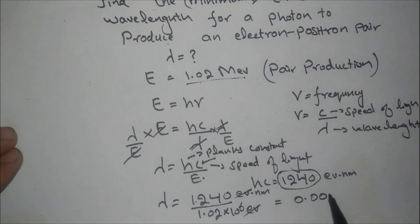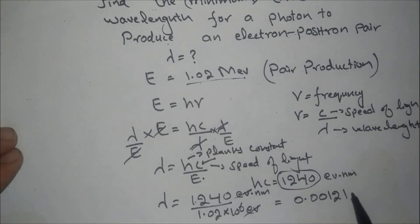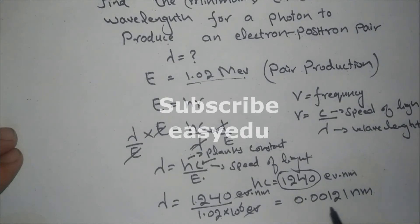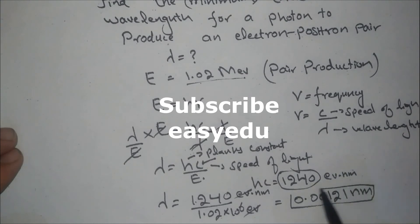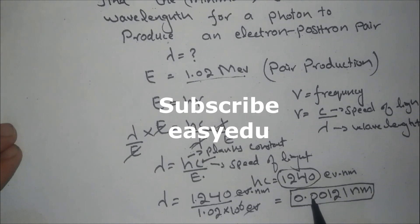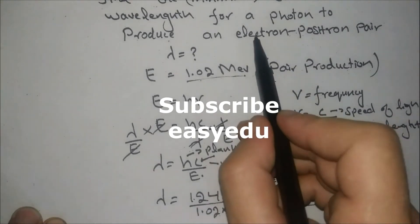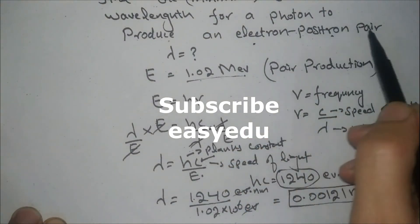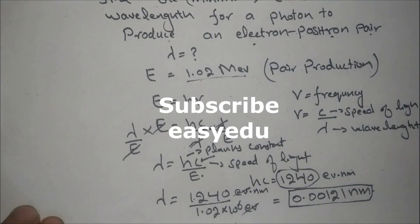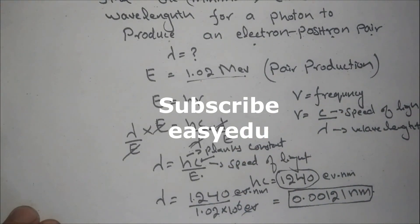The electron volts cancel, and dividing gives 0.00121 nanometers. This is the minimum wavelength, or the threshold wavelength required for the photon to produce an electron-positron pair. Thank you for watching, and don't forget to subscribe for more videos.